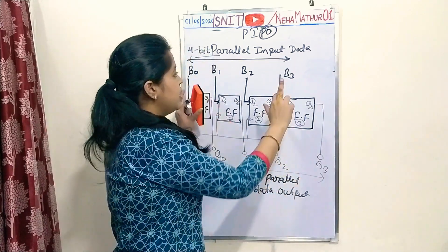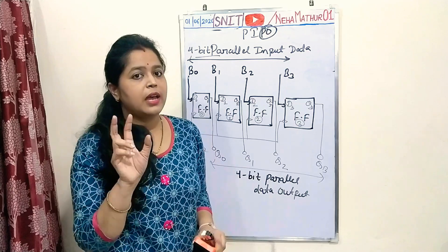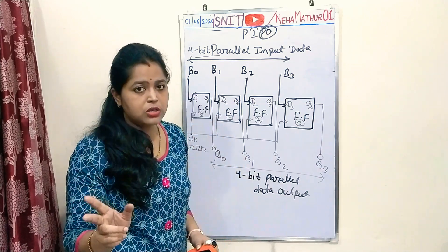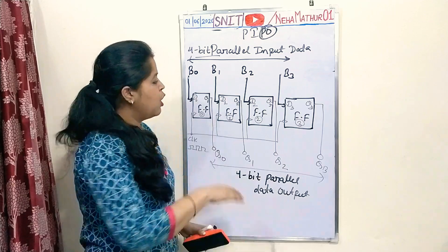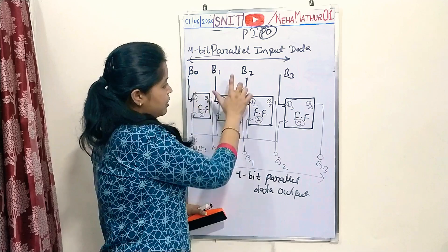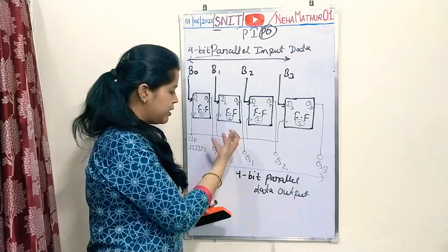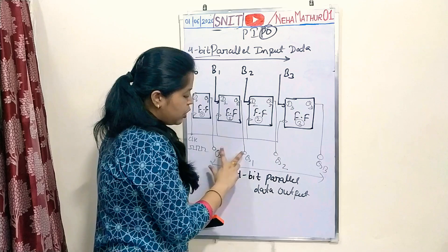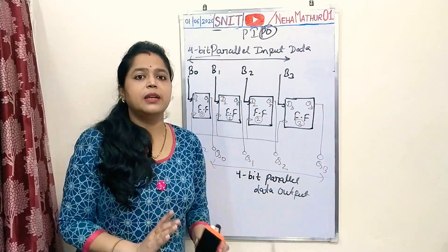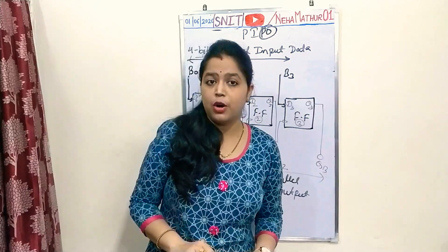Then, once you are done with the loading, the second step is application of the clock. The circuit will be active for the negative edge of the clock. Once your clock goes to 0, all the flip-flops will be active. Input is already set for the flip-flops, and then you can retrieve your outputs Q0, Q1, Q2, Q3 simultaneously — that means in parallel form. This is the actual concept of Parallel Input Parallel Output.